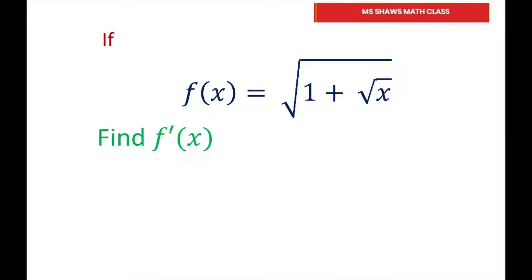It may look a little daunting here, but basically what I'm going to do is just rewrite this as 1 plus x to the 1 half, to the 1 half power. And then it's fairly easy to use the chain rule and take the derivative.